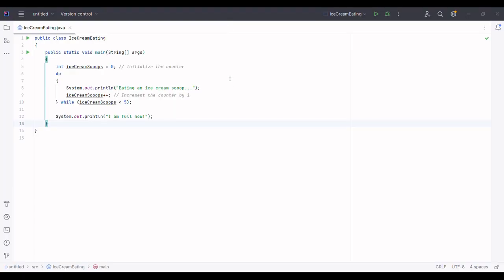Let's switch to the code editor and see how we can implement this ice cream eating scenario in Java. Look at these lines of code. In this code we have a value that consists of a block of code and a condition.